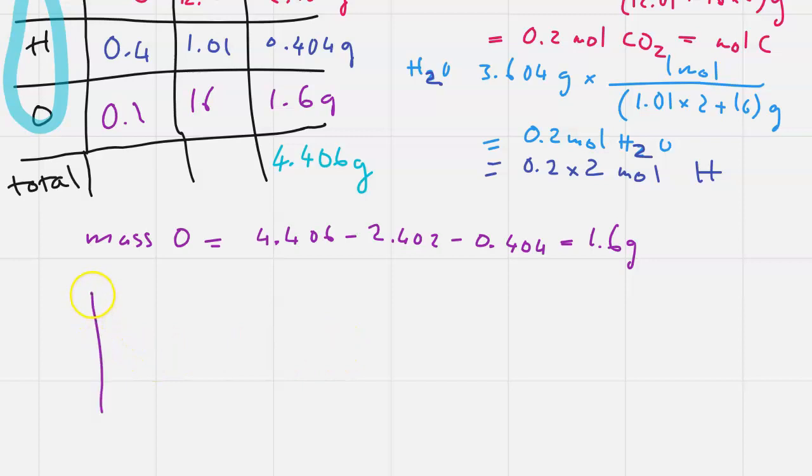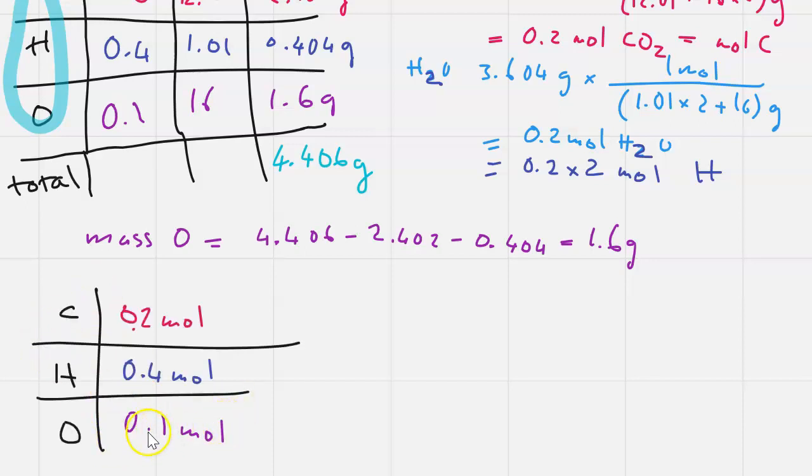So next step, as with all empirical formula questions, you will divide the number of moles by the smallest available mole. I'm going to redraw this table because it's getting a little bit too crowded. Oxygen is the smallest number of moles, so I'm going to divide everything by the smallest number of moles, 0.1.